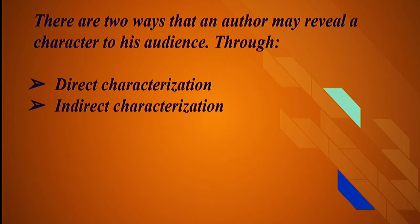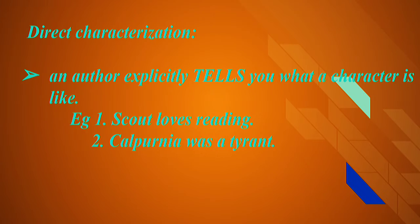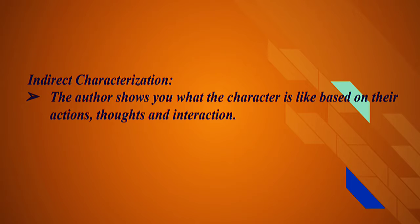You might be wondering what this is. Direct characterization is where the author explicitly tells you outright what a character is like. In indirect characterization, the author shows you what the character is like based on their actions, their thoughts, and interactions.